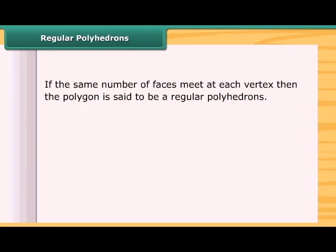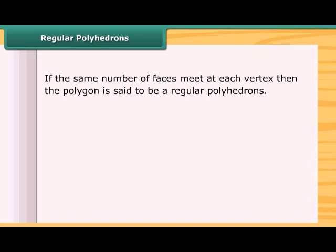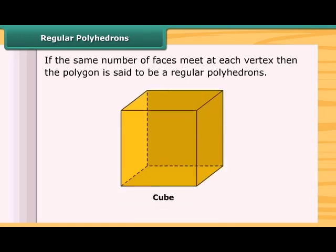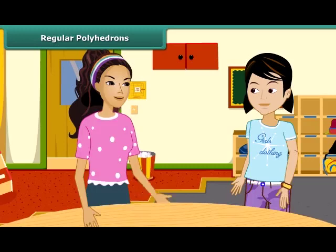If the same number of faces meet at each vertex, then the polygon is said to be a regular polyhedron. A cube is a regular polygon because here, three faces meet at each vertex.